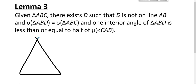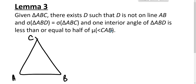Lemma 3 says: given triangle ABC, there exists a point D such that D is not on line AB, the sum of the measures of the angles of triangle ABD equals the sum of the measures of the angles of triangle ABC, and one interior angle of this new triangle is less than or equal to half the measure of angle CAB.